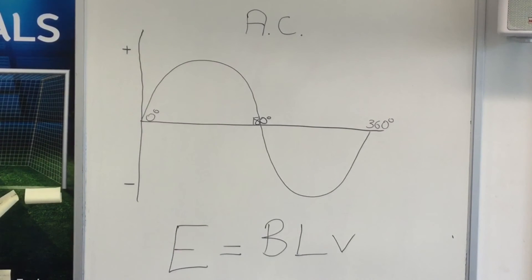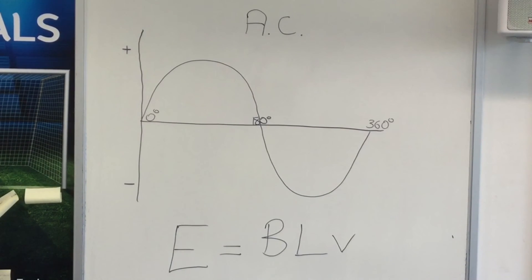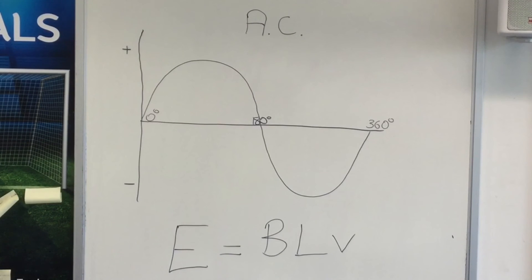The one thing we didn't manage to change was the strength of the magnetic field. The formula is: E, which is EMF, equals flux density in Teslas represented by B, multiplied by the length of the conductor in meters, and V — lowercase V — which is the velocity in meters per second, so in other words the speed at which we pass the conductor through the magnetic field.